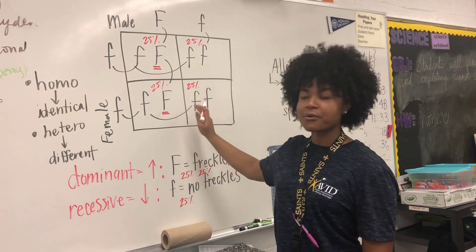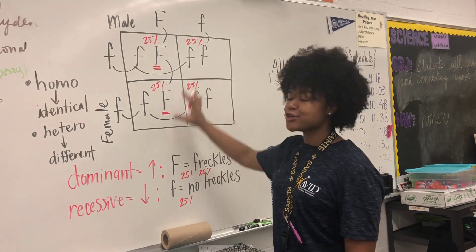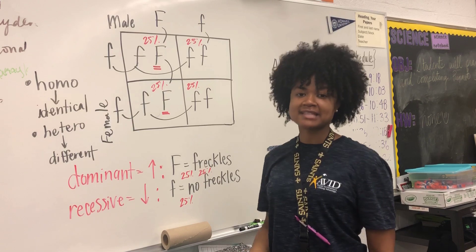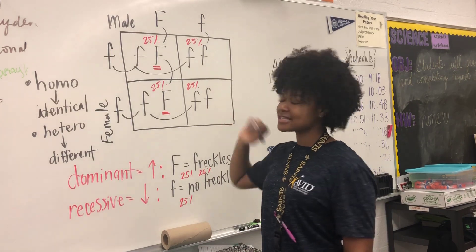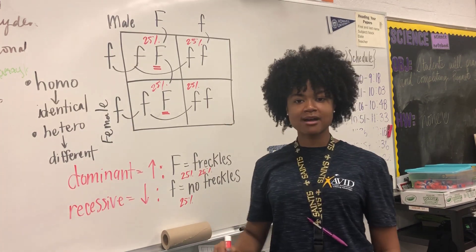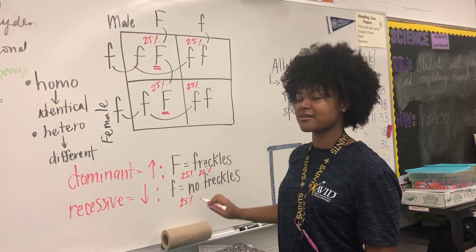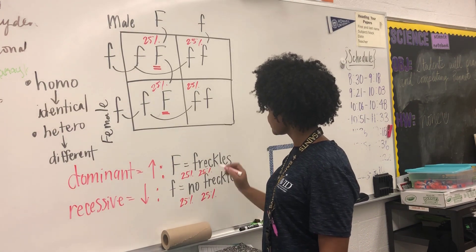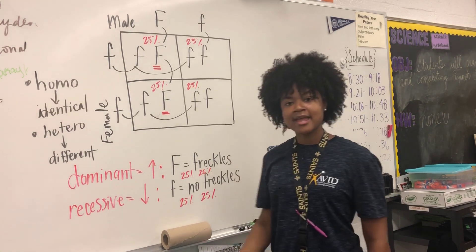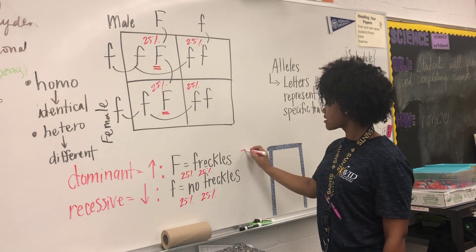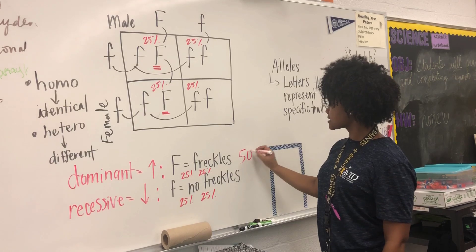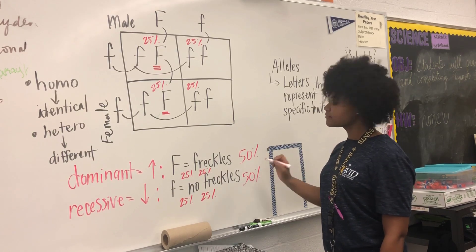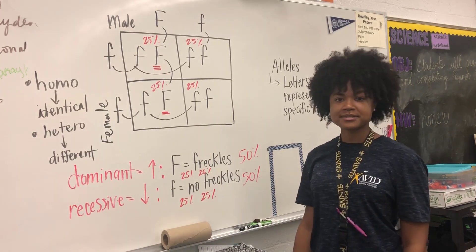And in box four, I have no dominant or uppercase allele, which means that this Punnett square box goes to my recessive trait. If I add my totals, my outcome is 50% for freckles and 50% for no freckles.